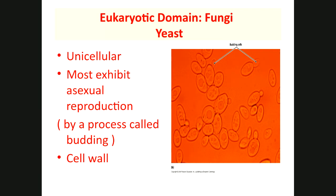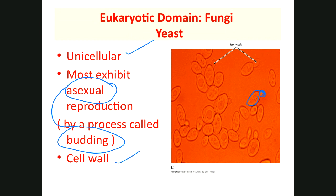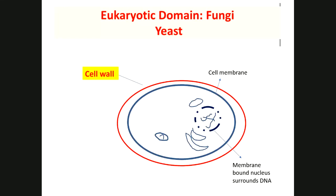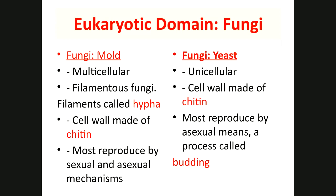Yeast are unicellular fungi. Most exhibit asexual reproduction by budding. They have a cell wall. Comparing mold and yeast: one is multicellular, the other unicellular; mold has hyphae, yeast does not. Both have cell walls made of chitin. Yeast reproduce by budding; mold goes through sexual and other forms of reproduction.